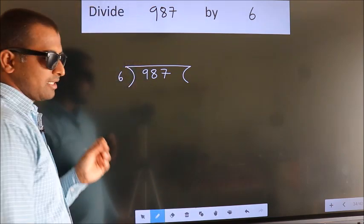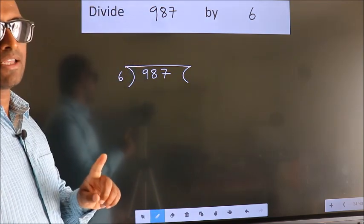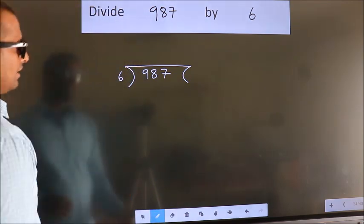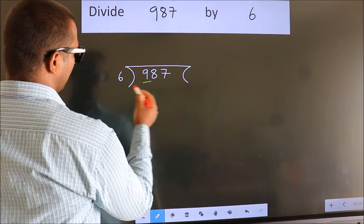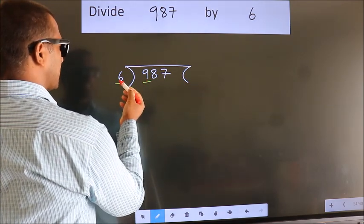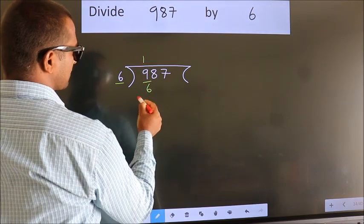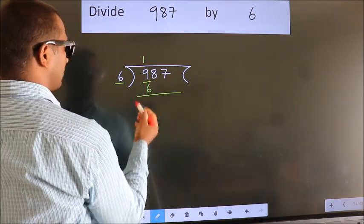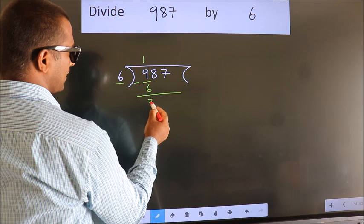This is your step 1. Next, here we have 9, here 6. A number close to 9 in the 6 table is 6 once, 6. Now we should subtract. We get 3.